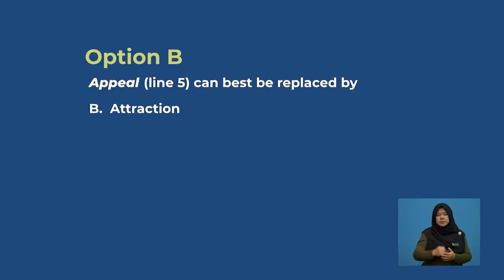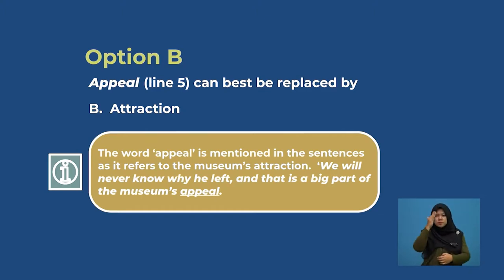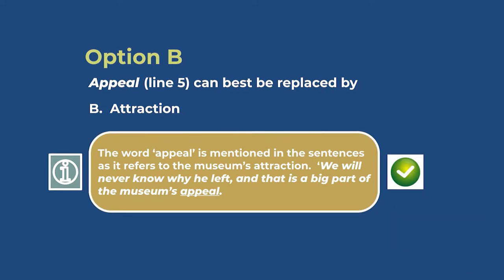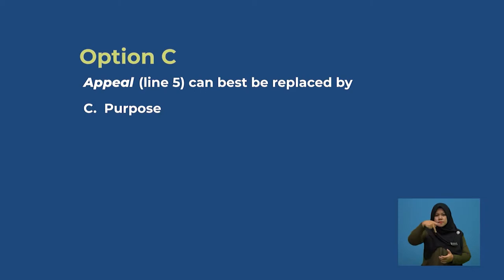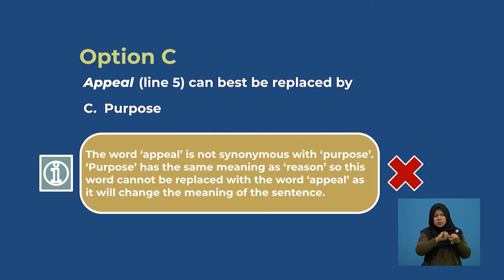Let's look at option B. 'Appeal,' line five, can best be replaced by B, attraction. The word 'appeal' is mentioned in the sentence as it refers to the museum's attraction: 'We will never know why he left, and that is a big part of the museum's appeal.' Let's look at option C. 'Appeal' is not synonymous with 'purpose' — purpose has the same meaning as reason. So this word cannot be replaced with 'appeal' as it will change the meaning of the sentence.